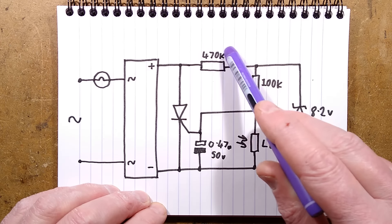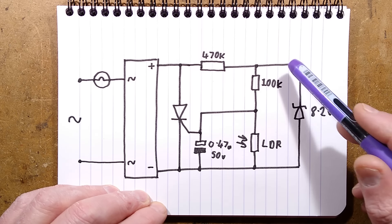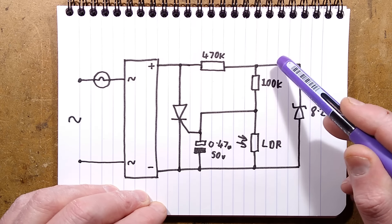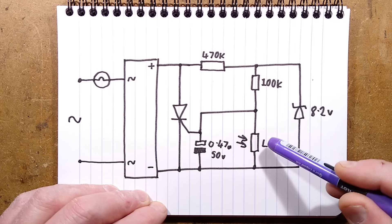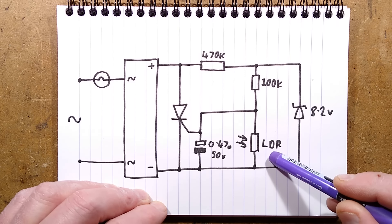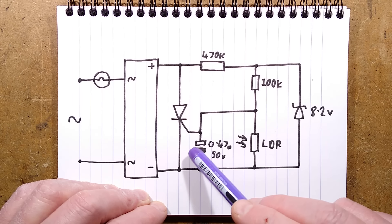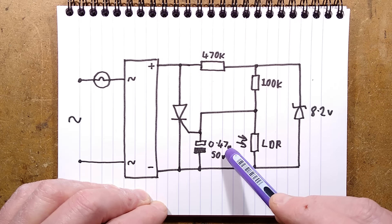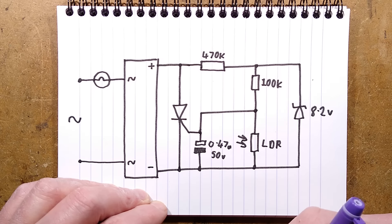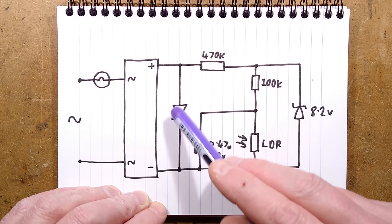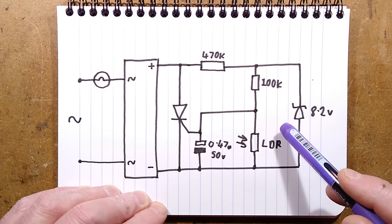There is the current limiting resistor up there, 470K, quite high value. And there is the zener diode that gives a fairly stable-ish voltage here. There is a potential divider, 100K resistor, and the LDR, the light-dependent resistor, probably cadmium sulfide. And it then just goes over to the gate of that thyristor with a little 0.47 microfarad capacitor, which is probably just to add at least some element of stability. And that turns the thyristor on when the light level is at the correct level.